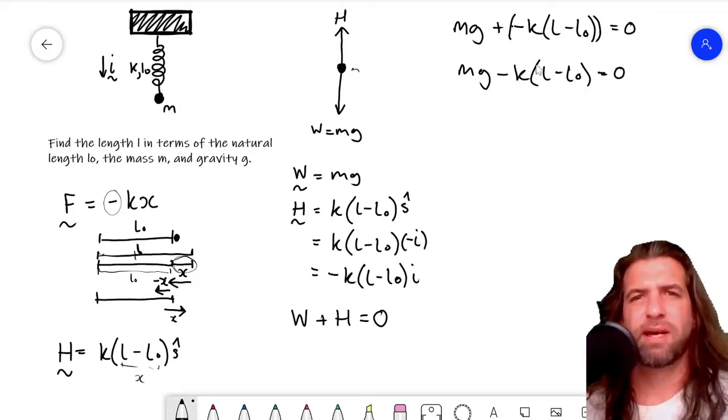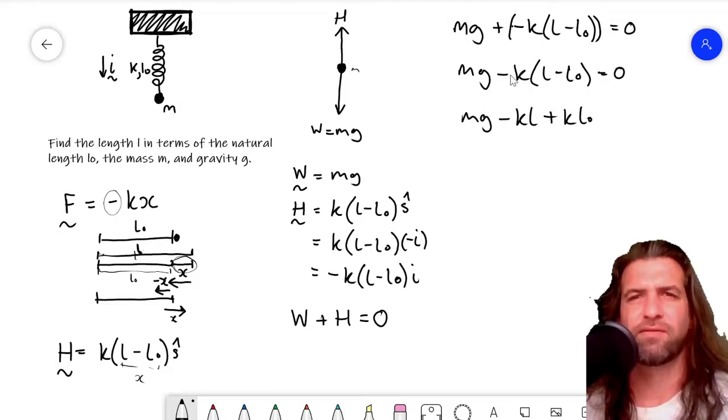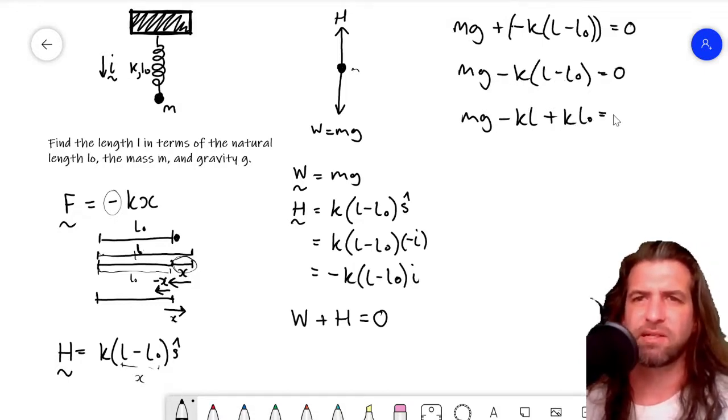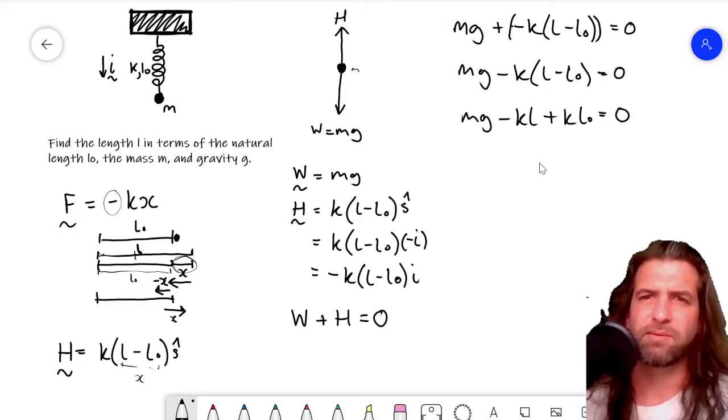mg minus k(L - L0) is equal to zero. And we've got mg minus kL plus kL0 is equal to zero. And you've got minus here and minus here and a minus there. So together that's a plus, minus times minus is a plus. It's equal to zero.